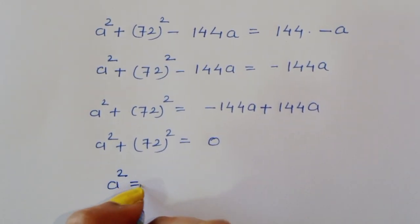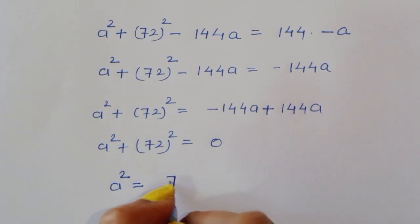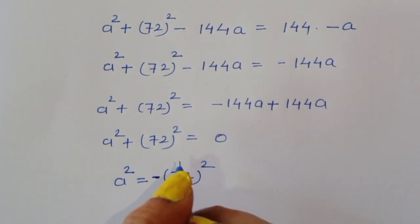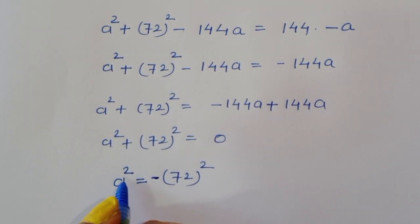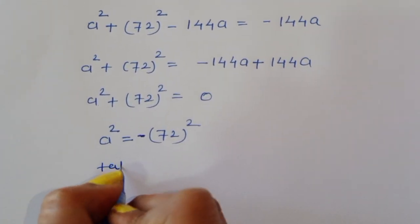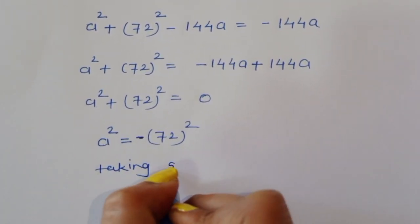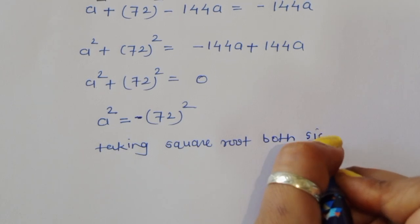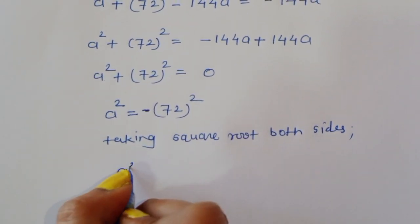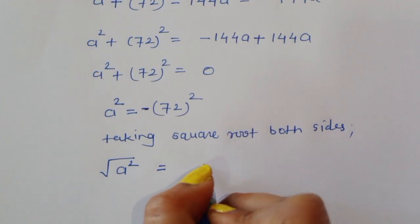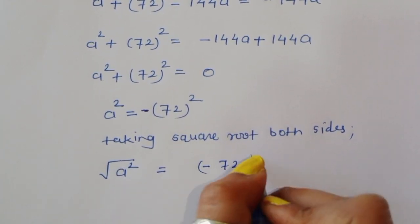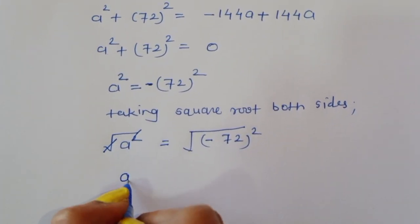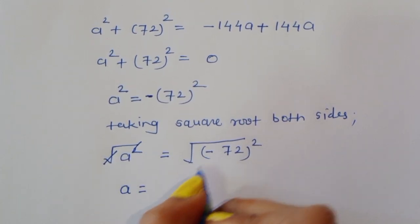So we are left with a² = −72². Taking the square root of both sides: √(a²) = √(−72²). The square cancels from the square root, giving a = ±√(−72²) = ±72 × √(−1).